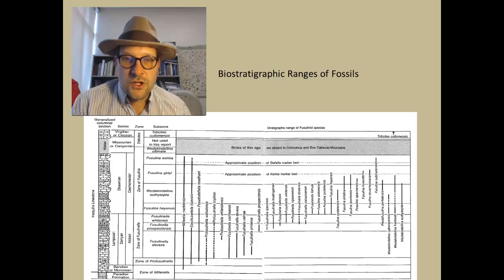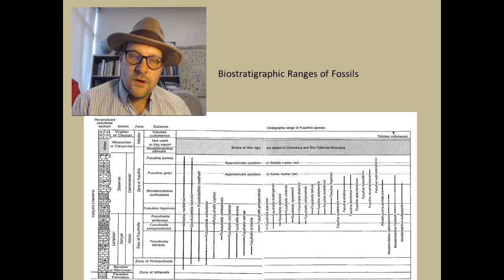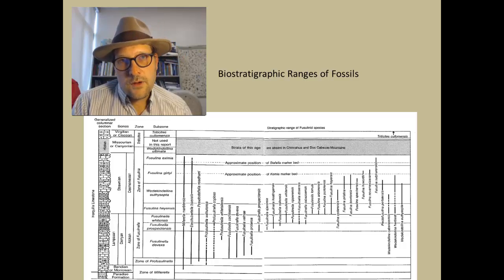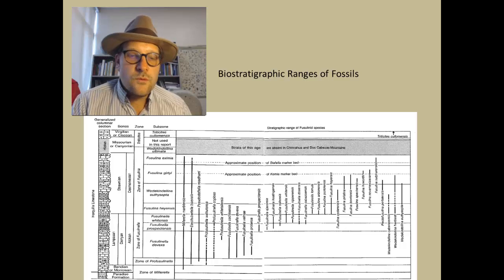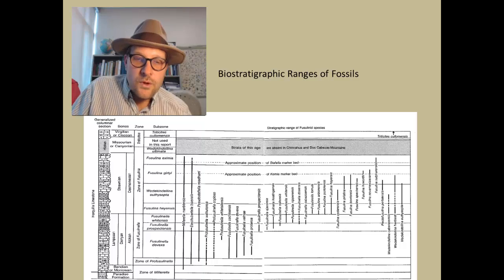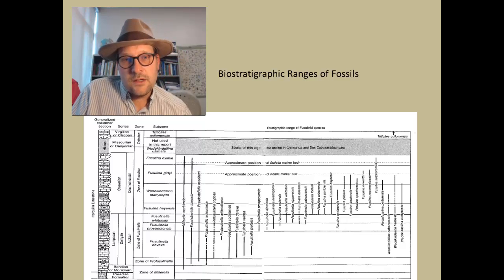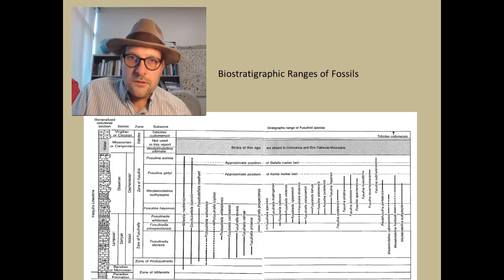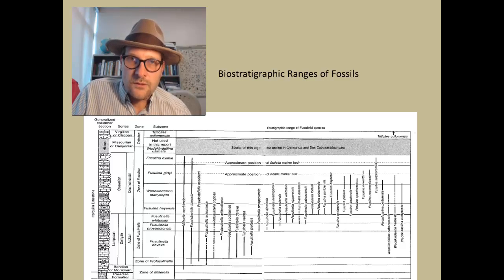You put together a biostratigraphic range chart, where you know you have some species found in every single rock unit and others only in various areas. You can define the first appearance and last appearance and draw a line between them, or sometimes you have just one or two individuals spread over a period of time. You can get a complete range of the different types of species.